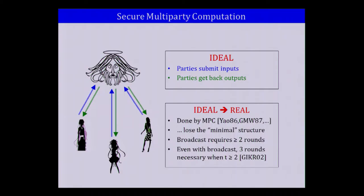What happens is that we typically lose the minimal structure of the ideal model protocol. In particular, we need more rounds. As a starting point, broadcast alone requires typically greater than or equal to two rounds, depending on the number of corruptions. And even if you assume a broadcast channel, we know that three rounds are necessary, especially when the number of corruptions is greater than or equal to two.